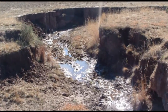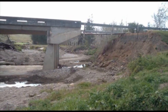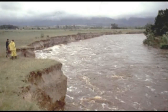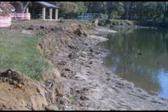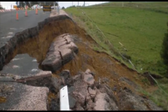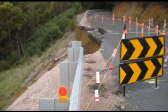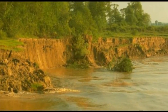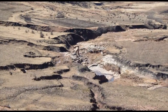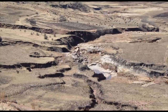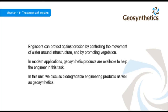Erosion can take many forms. The most visible is the scarring of the earth's surface caused by water flow and floods. Infrastructure is vulnerable to erosion, as is the natural landscape and private land holdings. Engineers need to design infrastructure for durability. Erosion can have a greater impact than one first considers. Engineers can protect against erosion by controlling the movement of water around infrastructure and by promoting vegetation. In modern applications, geosynthetic products are available to help the engineer in this task.